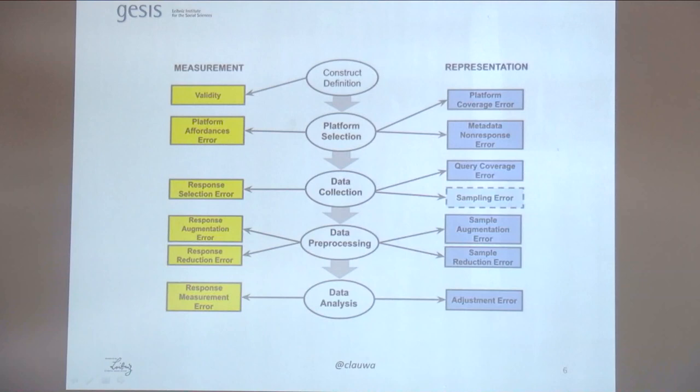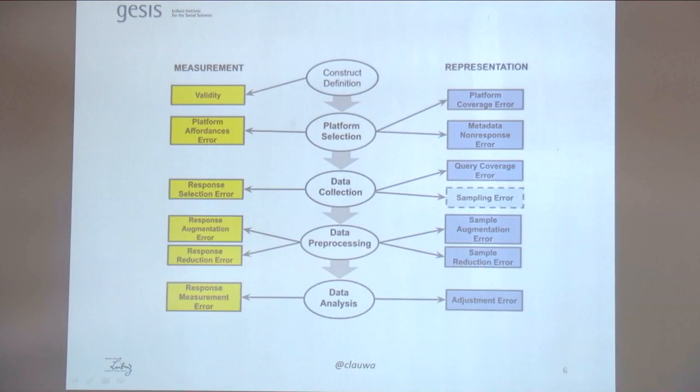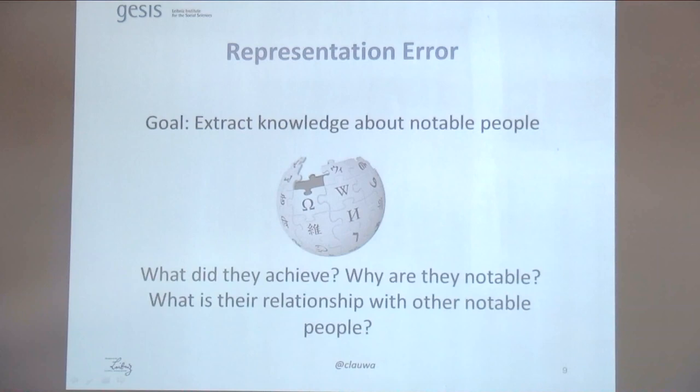After data collection, we do some pre-processing: detecting entities, metadata inference, sociodemographic inference — and here too, errors can occur. In the data analysis step, we try to label our responses with respect to the construct we are interested in. Something interesting happens here because we often use machine learning methods or data-driven algorithms, meaning representation errors and measurement errors get connected. If we train our stance detection method on the corpus we collected, all biases at the representation level will directly lead to measurement errors and make our measurement potentially invalid.